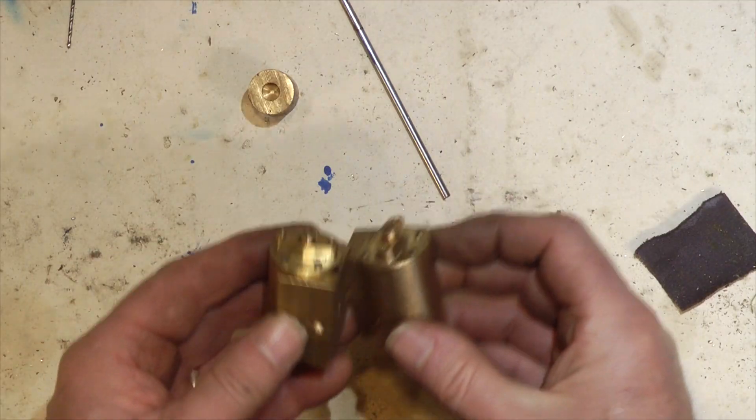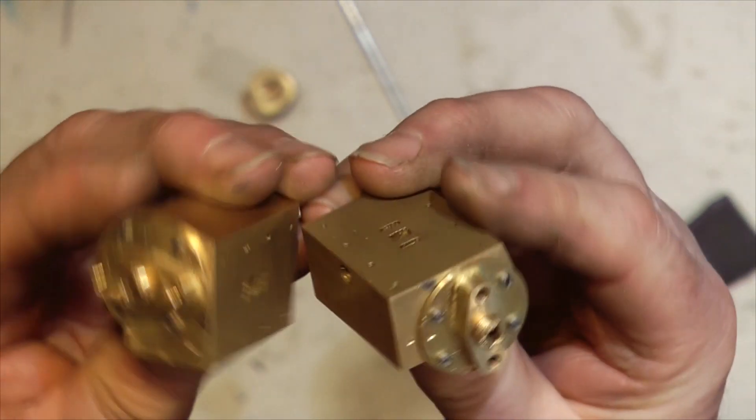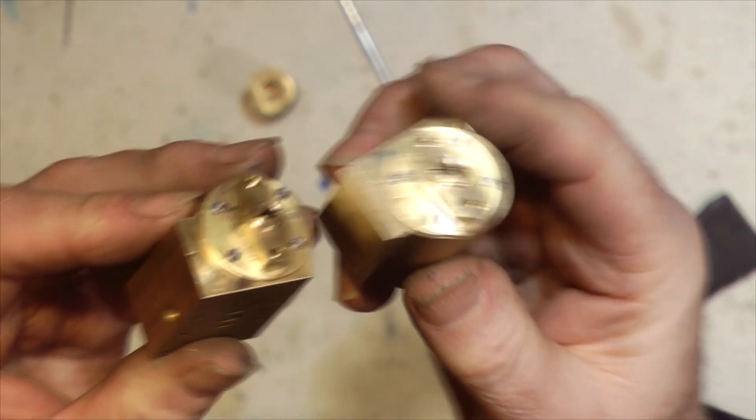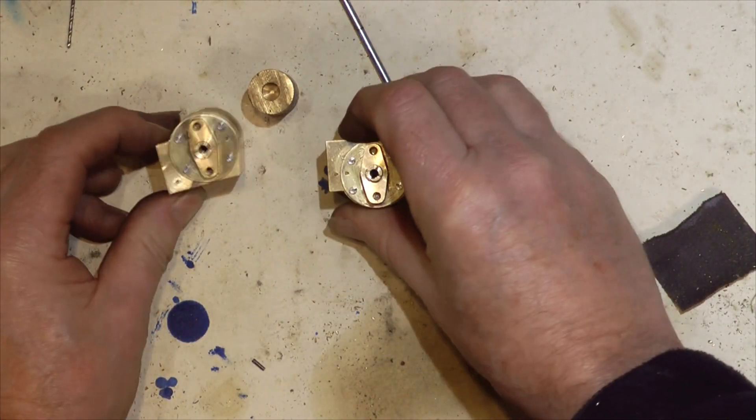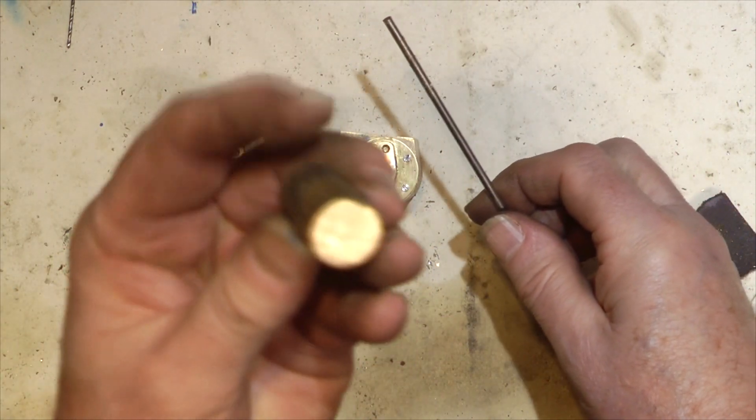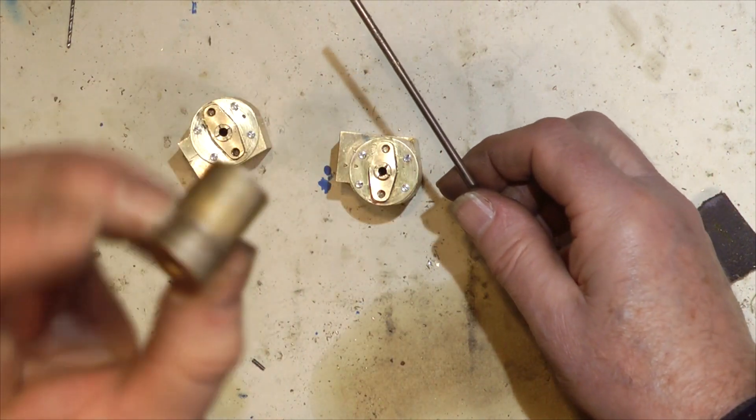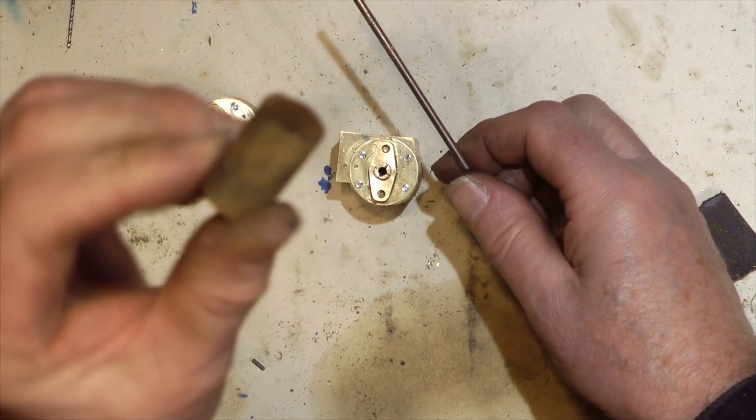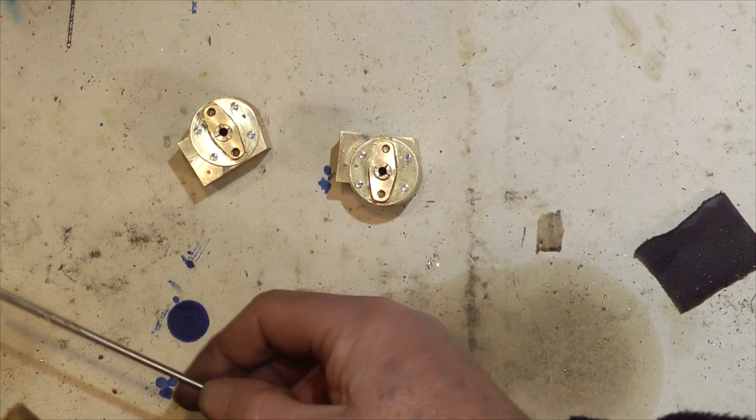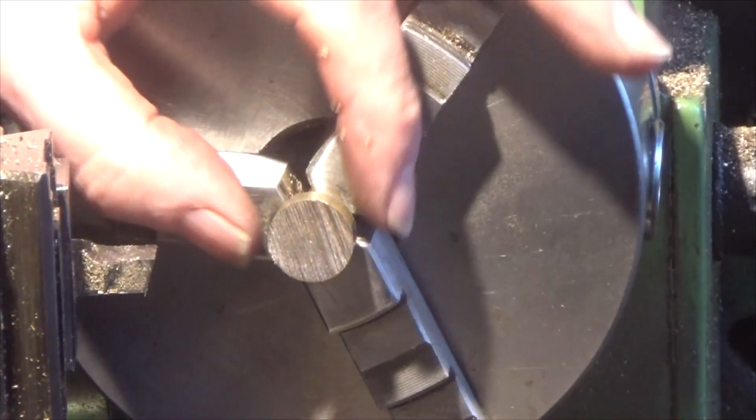There are end caps on now, both ends. Probably the last thing to do on this side of things is to finally make the piston. That's going to be made from this piece of phosphor bronze bar here to make the actual piston itself, and I shall be using this to make the rod.